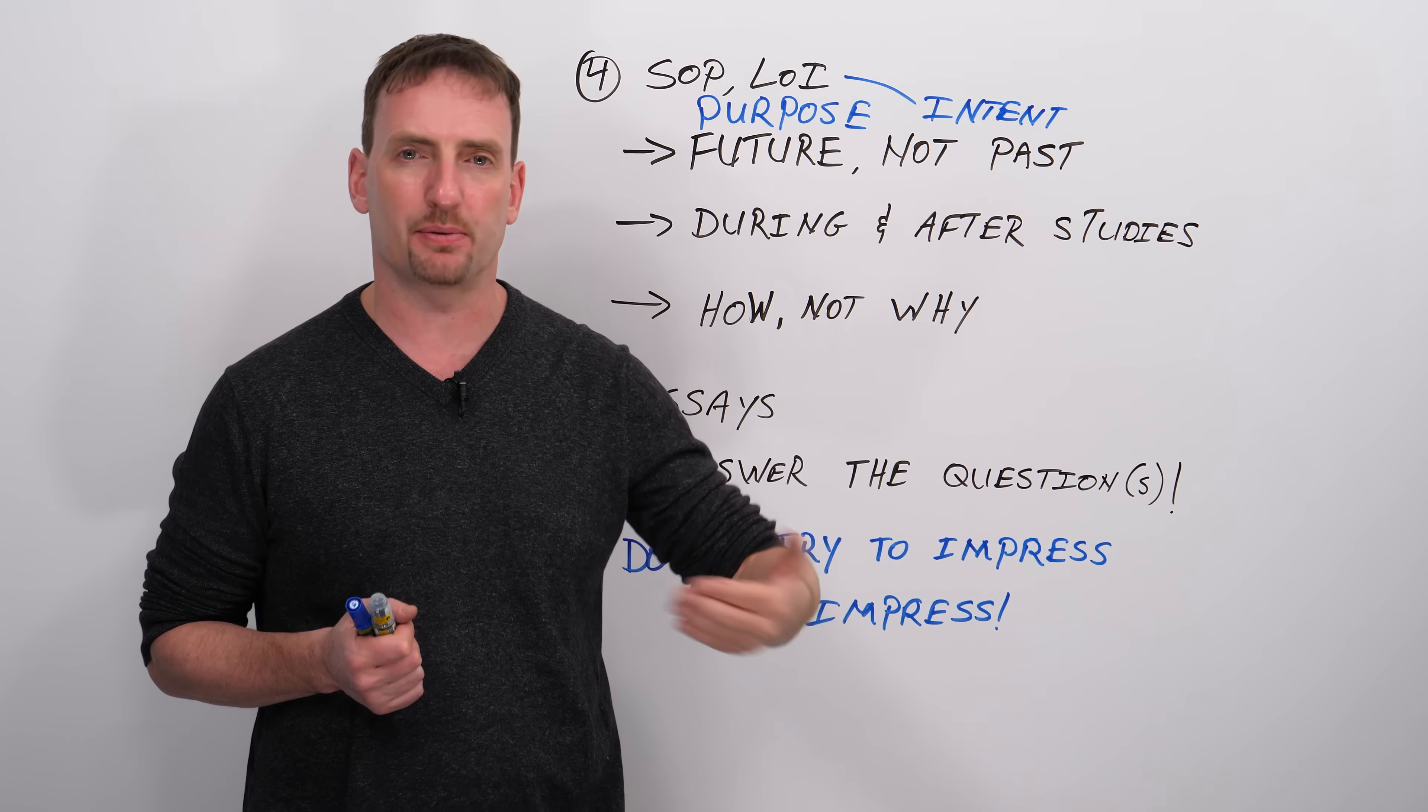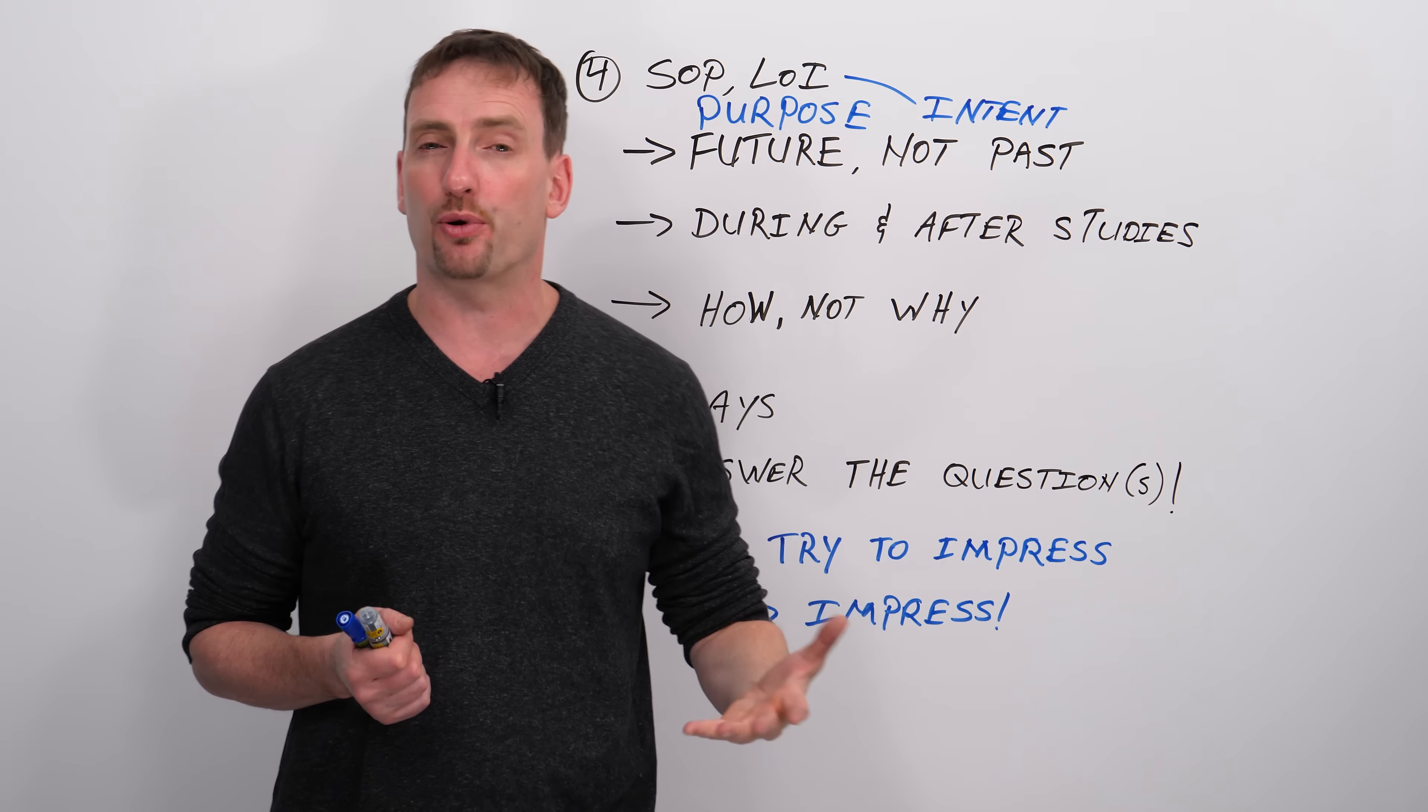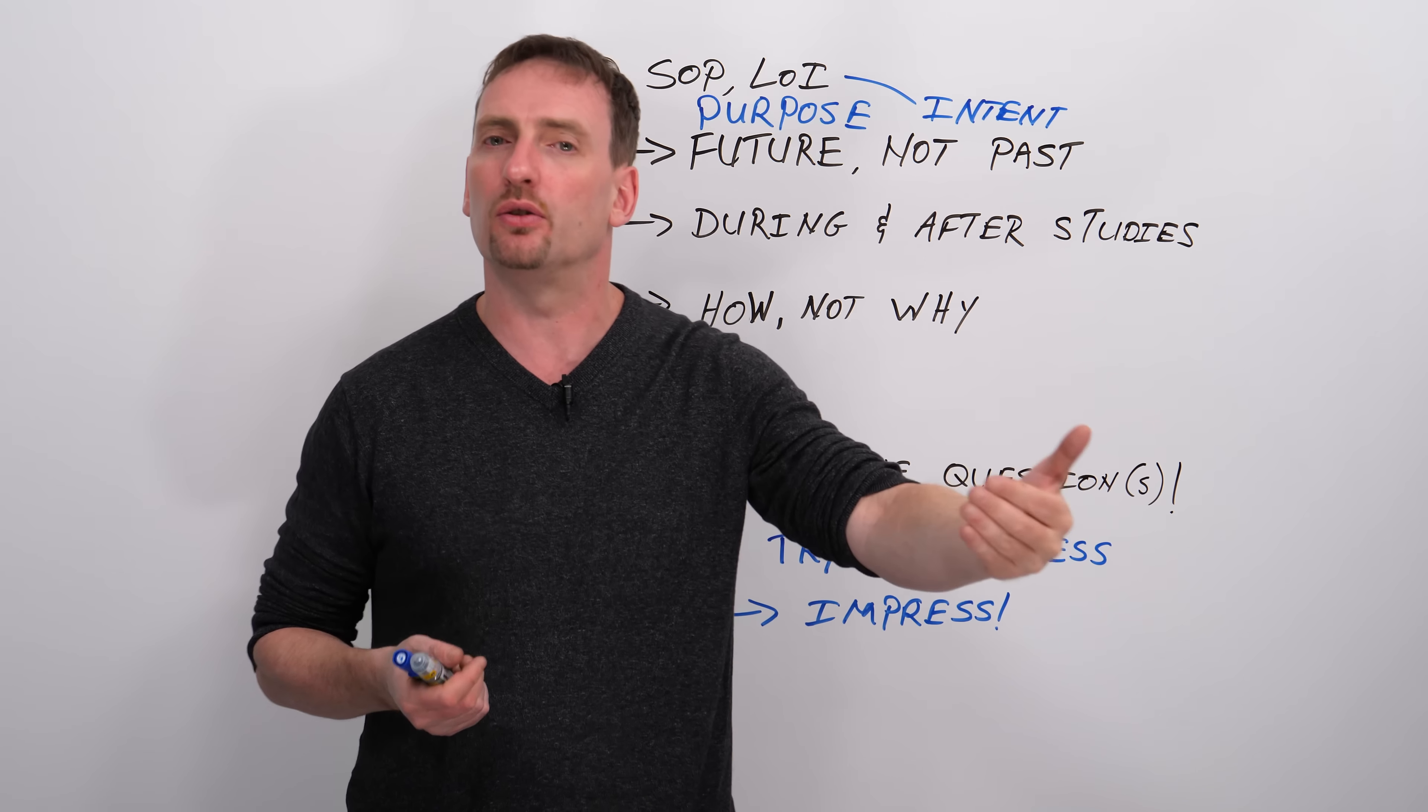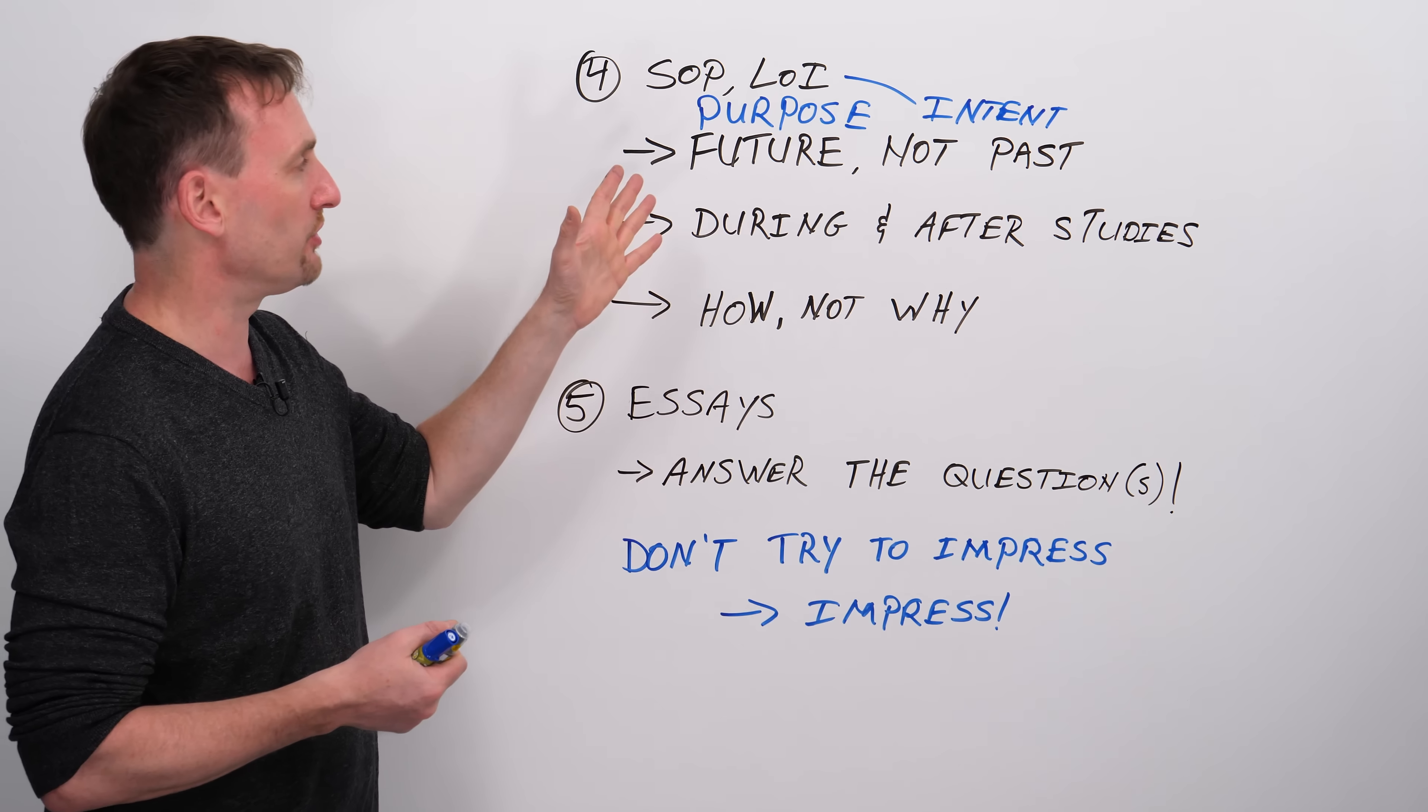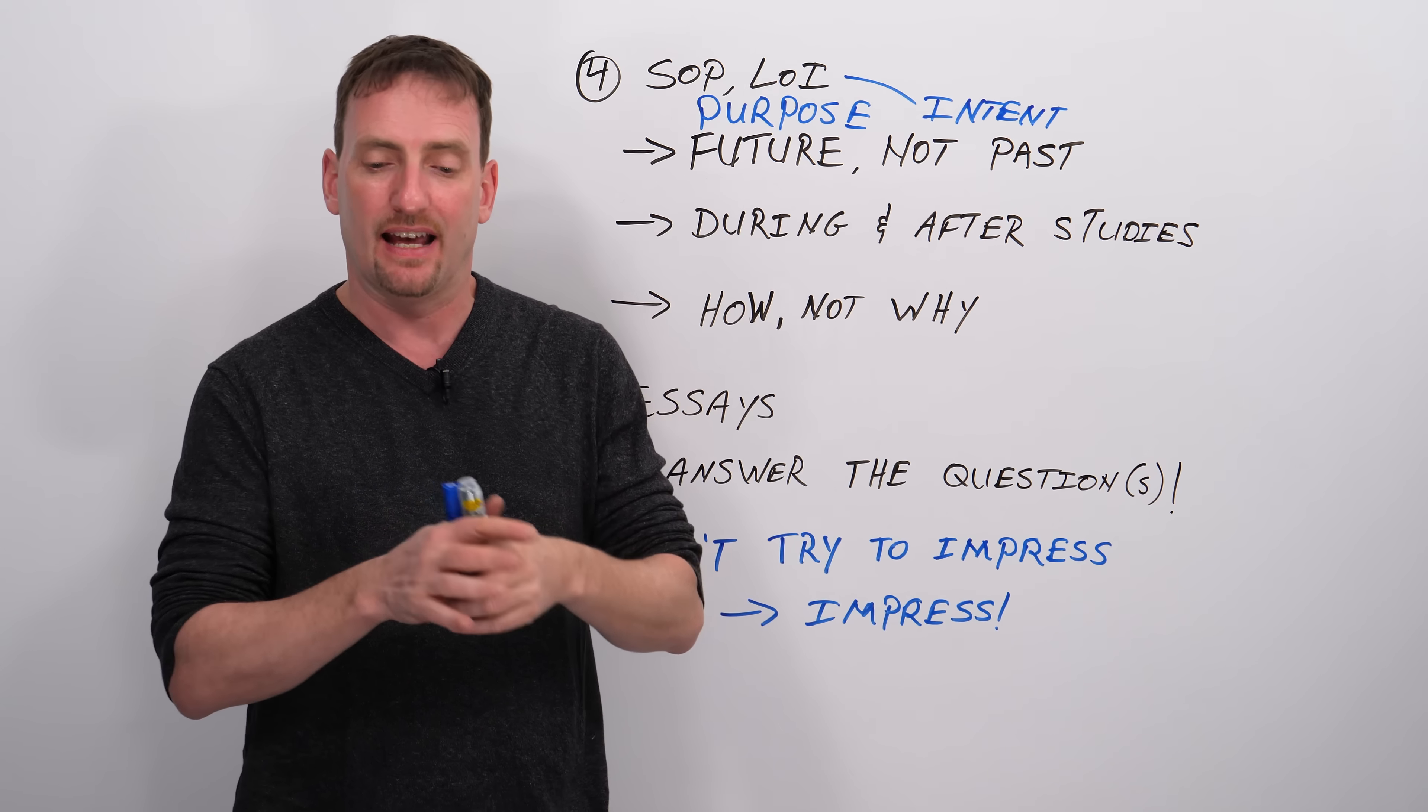Make sure you tell them, what is your purpose in coming to this school? What is your intention? What do you want to do if you are accepted into this school? And a lot of people make the mistake in the SOP or the LOI of talking about, oh, I did this, and I learned that, and I met—That's not purpose. That's background. A little bit of background, sure, is very important, but make sure that you focus on the future.